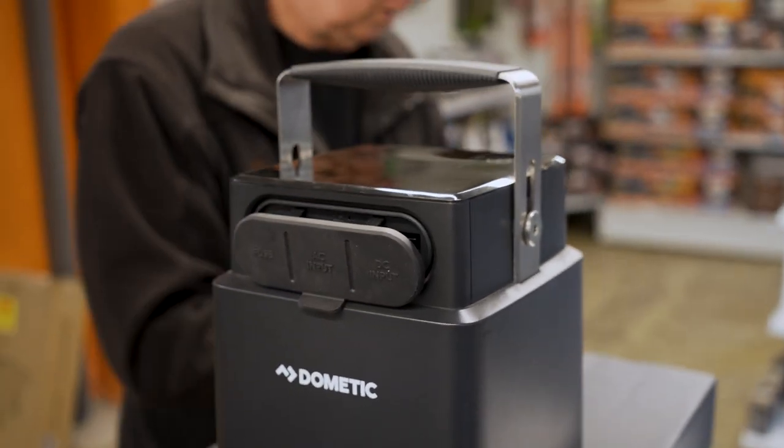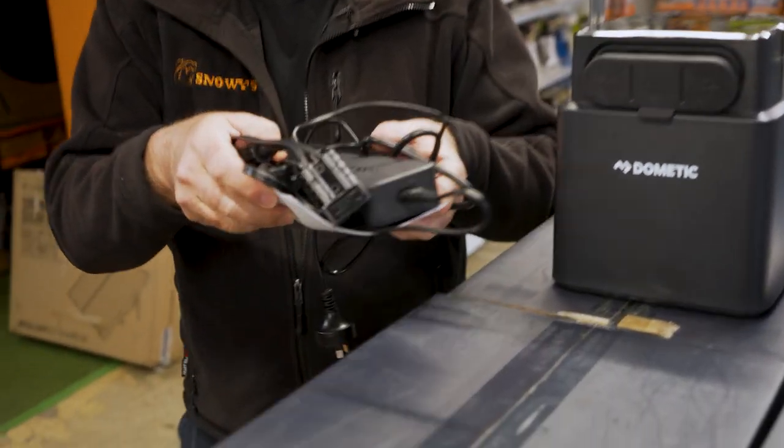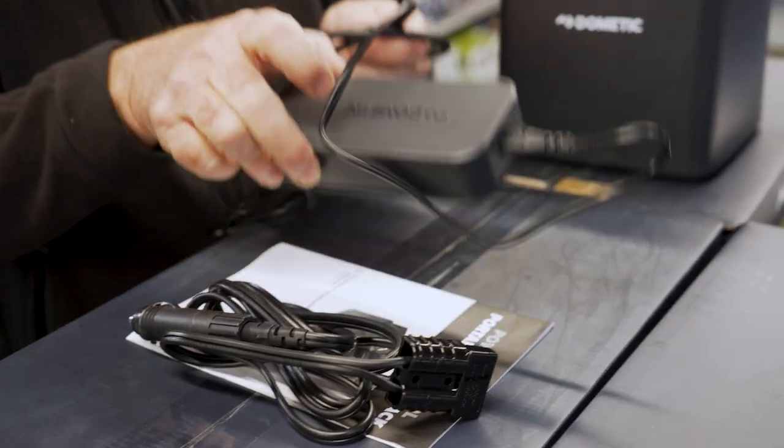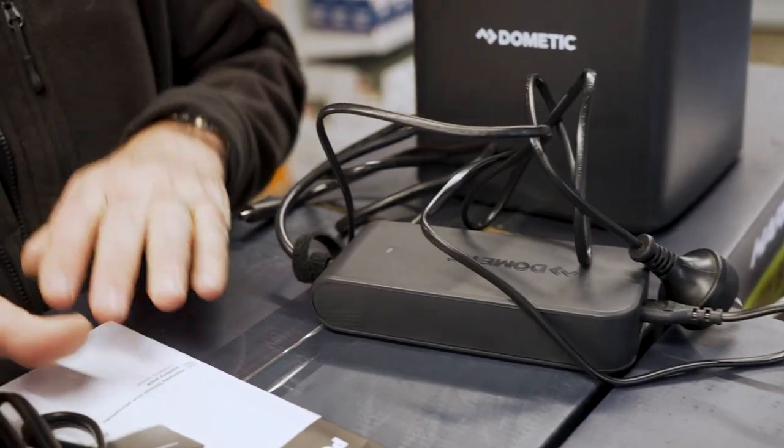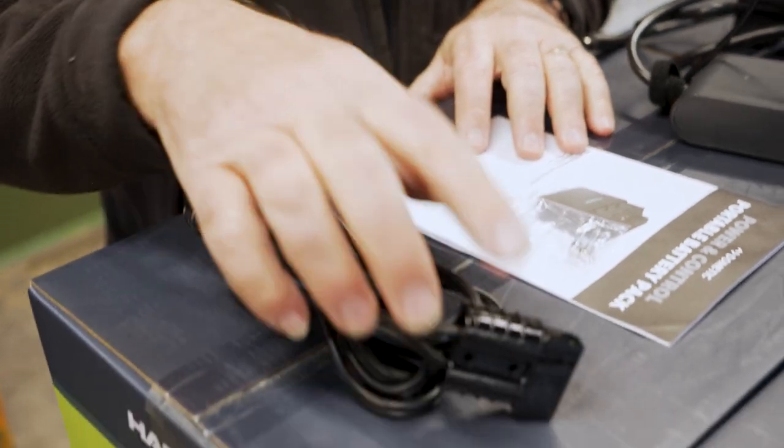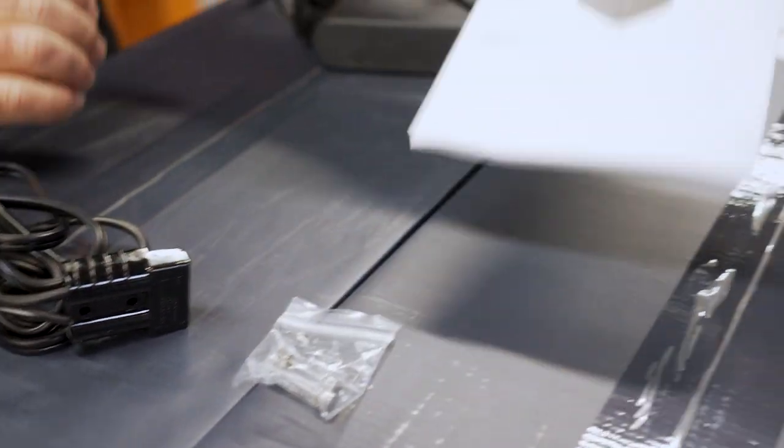When you buy these units, they do come with some extras. First of all, that is your mains power charger. That's what you plug into your mains and plug into your socket. That one is your 12-volt socket with your Anderson plug on the end. You get a couple of spare fuses, and of course, you get your instruction manual as well.